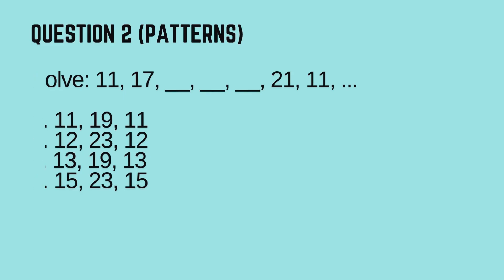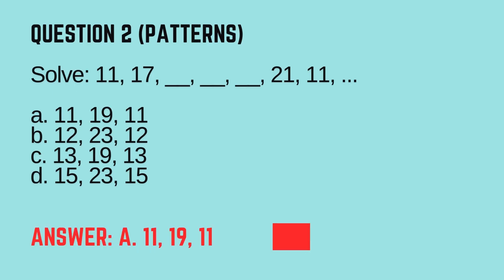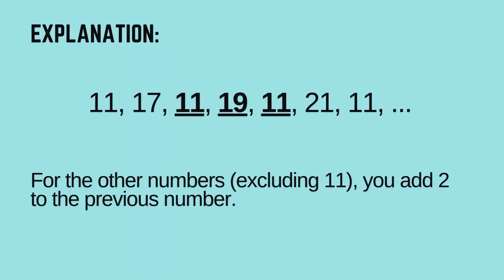Timer starts now! The correct answer is A: 11, 19, 11. Let's learn how. 11 is repeated every alternate position. For the other numbers excluding 11, you add 2 to the previous number. Following this pattern, after 17 add 2 to get 19, add 2 again to get 21.